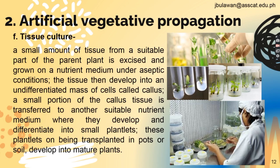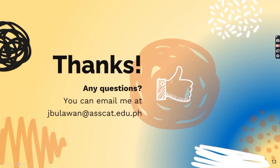That's all. These plantlets, upon being transplanted in pots or soil, develop into mature plants. That's all for the topic — the introduction to asexual propagation and nursery practices, especially the topic of natural and artificial vegetative propagation. Follow for the second part. Thank you.